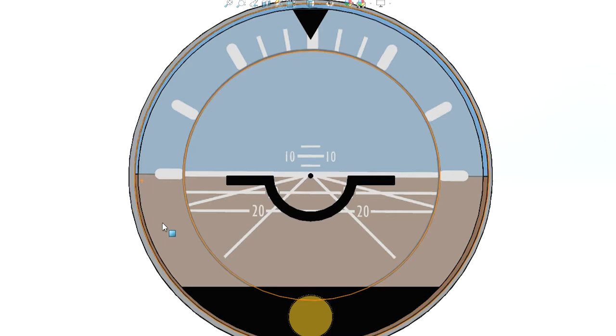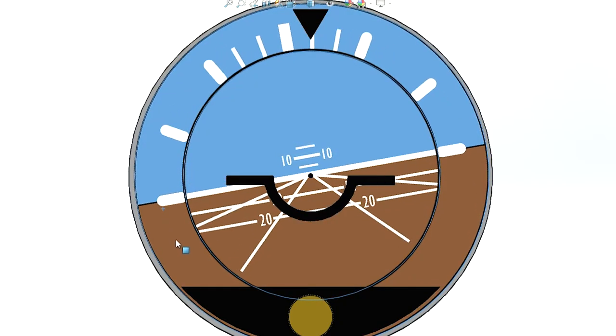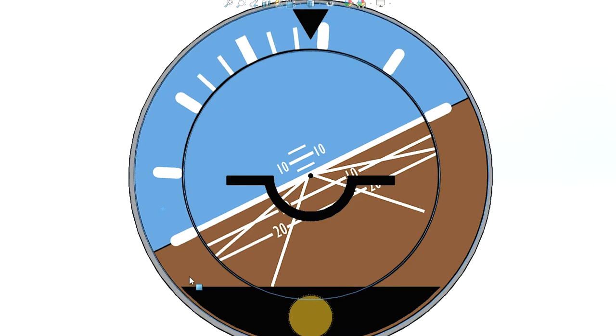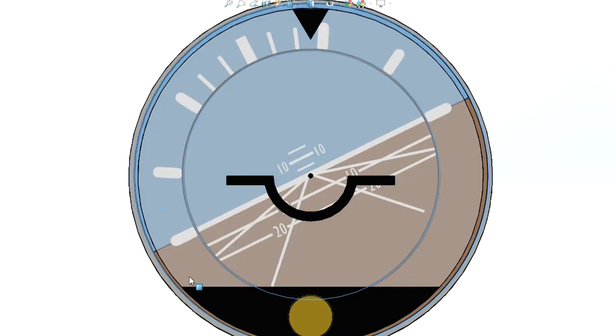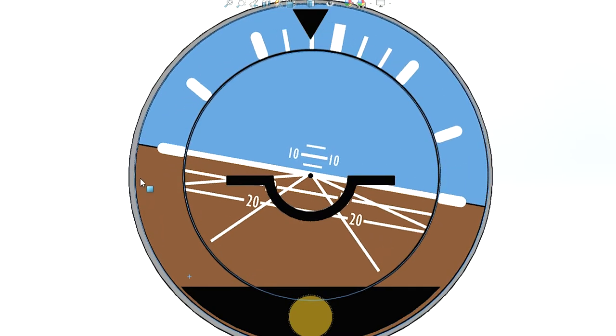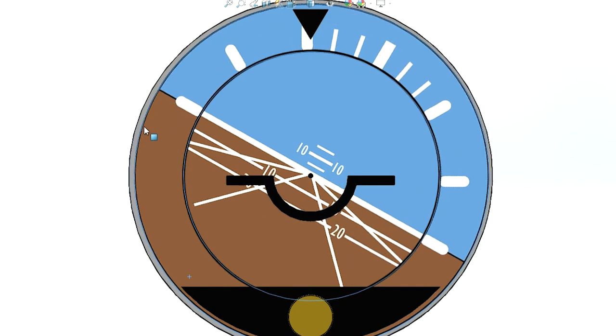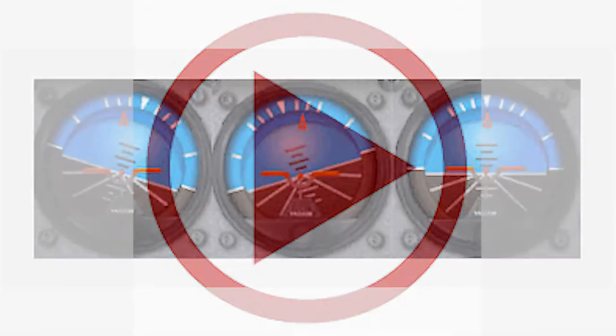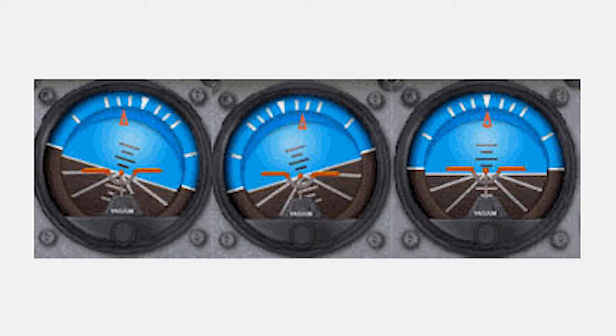Next is when an aircraft is banking to the right or banking to the left. Look at how an attitude indicator is going to move when an aircraft is banking to the right. Next is when an aircraft is banking to the left. See how the attitude indicator is going to move. For you to better understand, let me show you a short clip of an attitude indicator when an aircraft is banking to the right or banking to the left in an aircraft simulation.